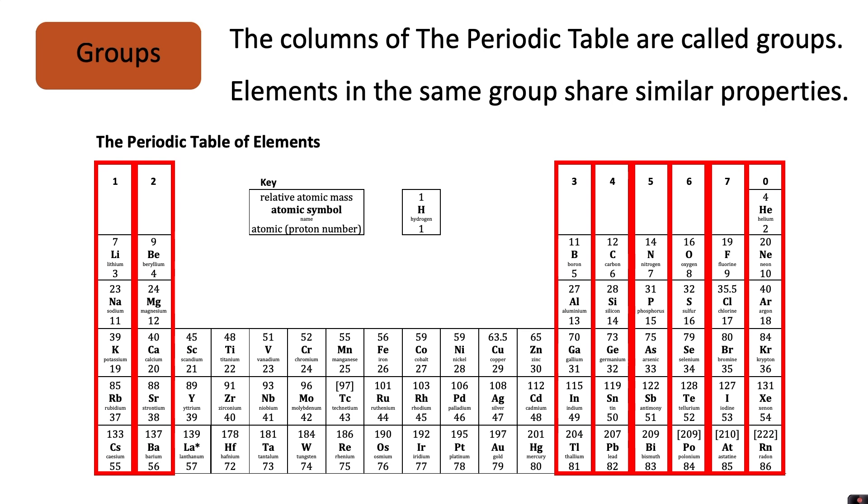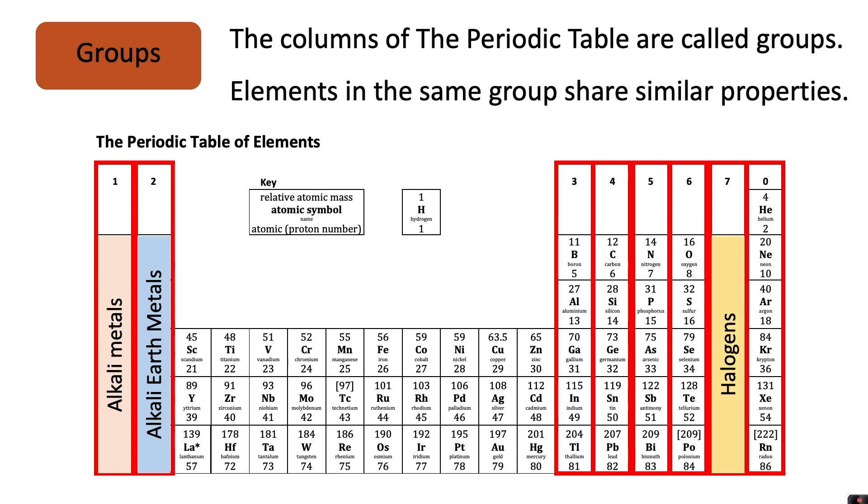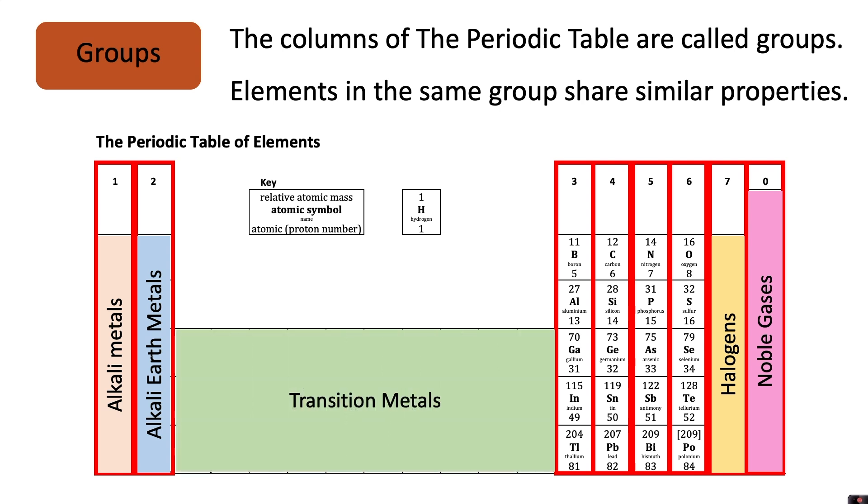You'll need to know the names of some of the major groups in the periodic table. Group one is called the alkali metals. Group two is called the alkali earth metals. Group seven is called the halogens. Group zero is called the noble gases and the central block of the periodic table is called the transition metals.